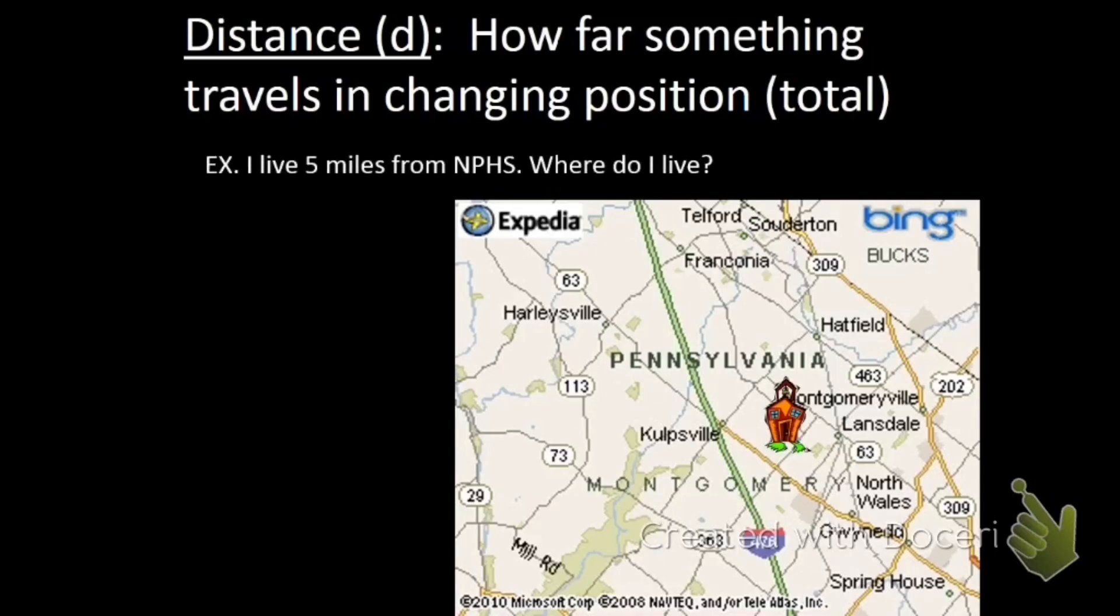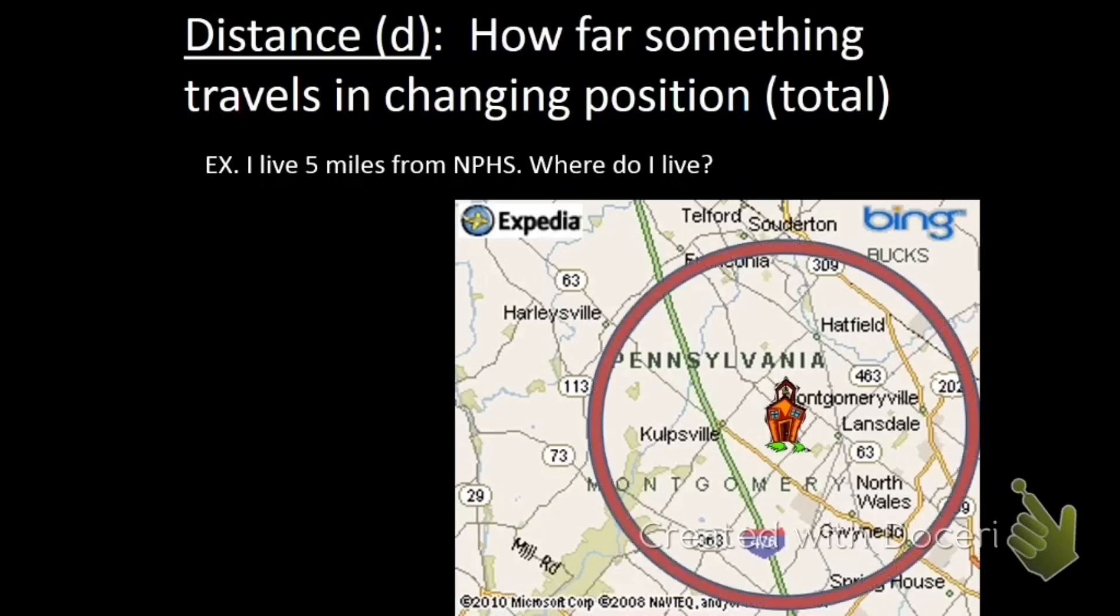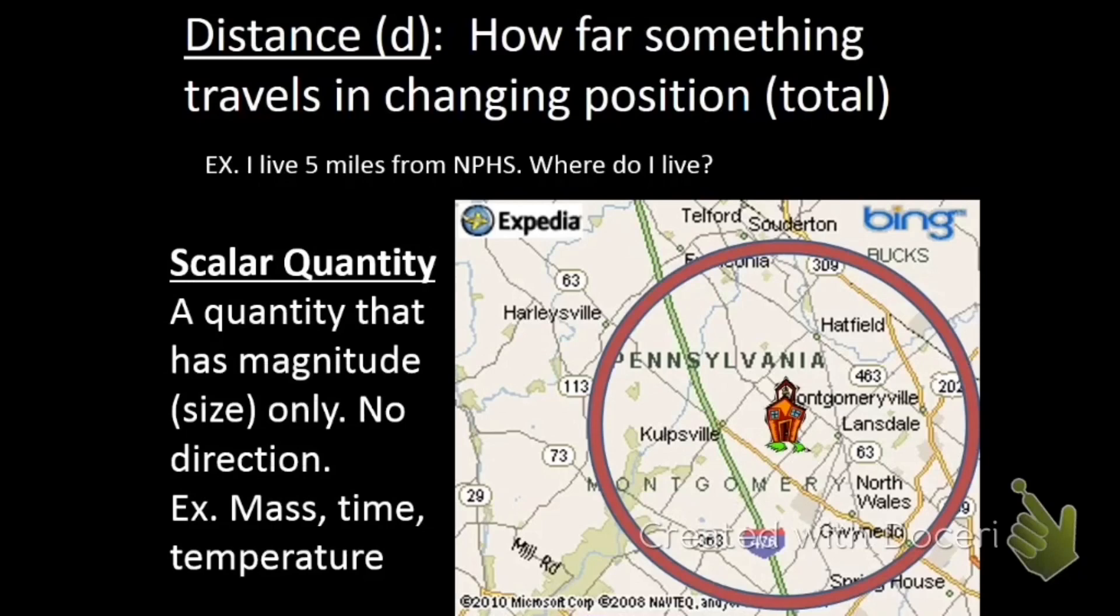For example, if something is five miles away from North Penn High School, where is it? So it could be anywhere in this circle, five miles away from the high school. We don't know which direction, and that brings us to another vocab term, scalar.